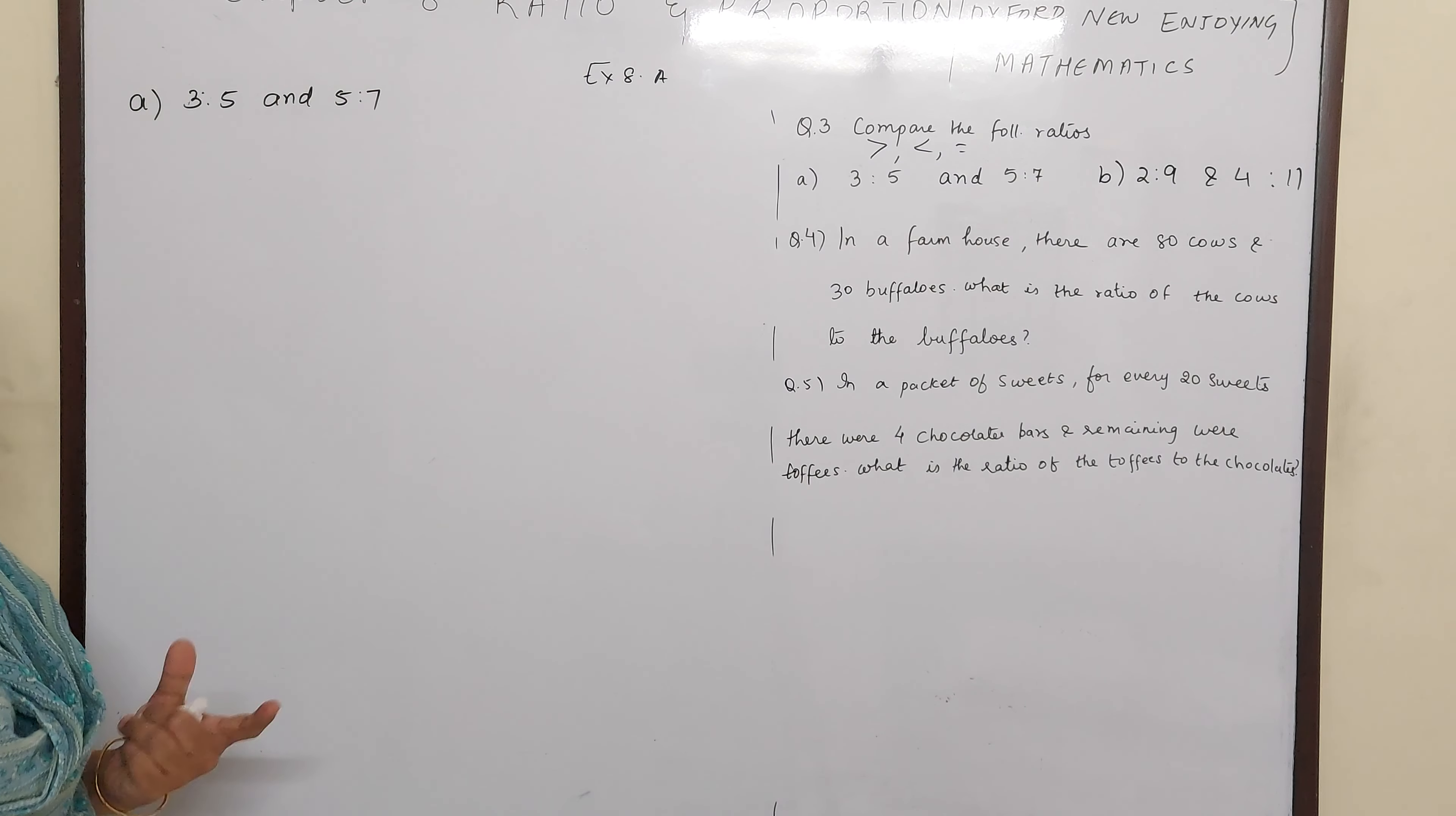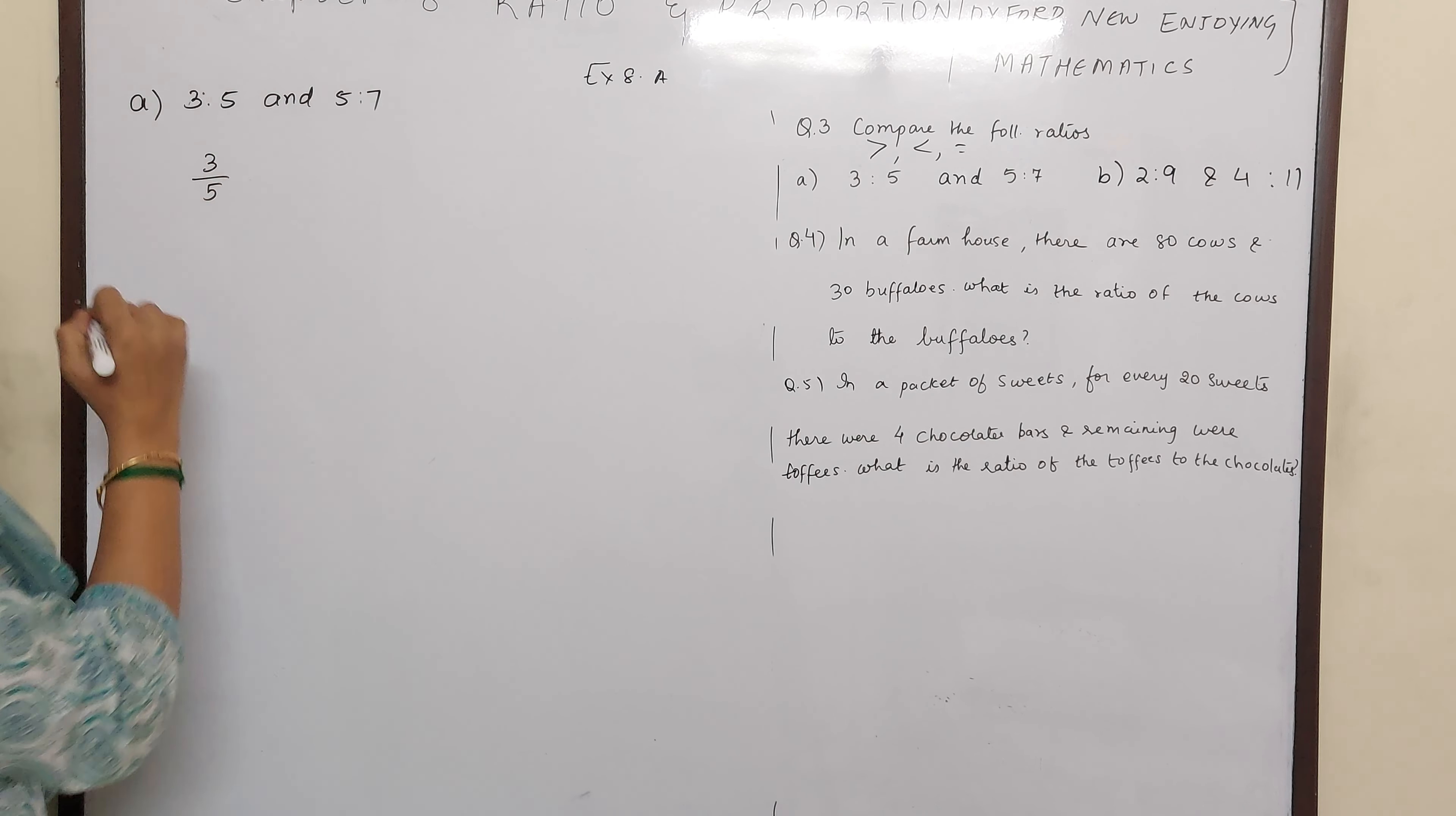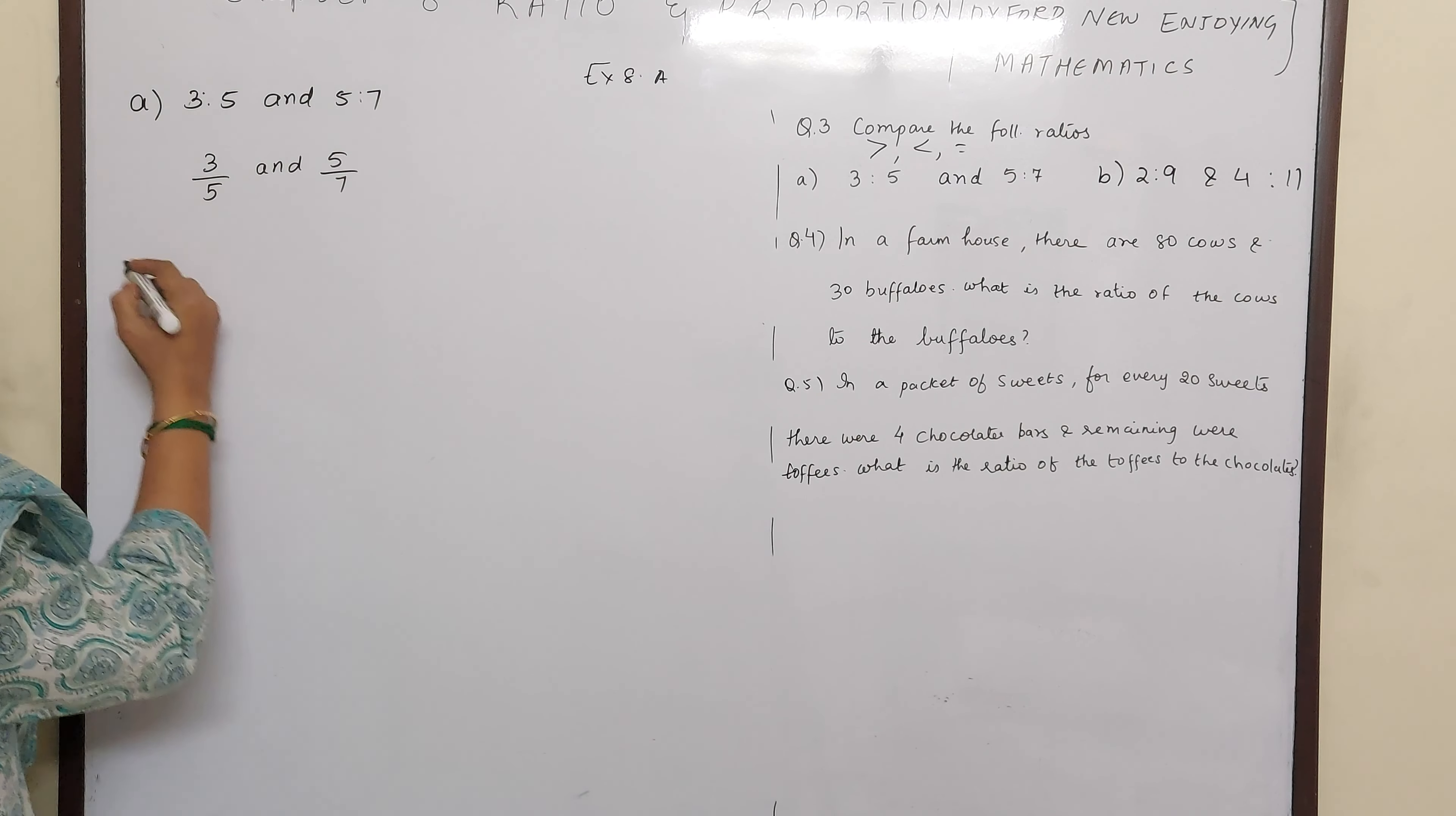Now there are 2 ways. Compare means which side is greater. So we will see both the methods. 3 by 5, 3 is to 5 can also be written as 3 by 5 and 5 is to 7 can also be written as 5 by 7. So let us do cross multiplication method.